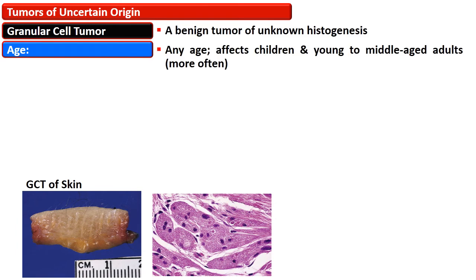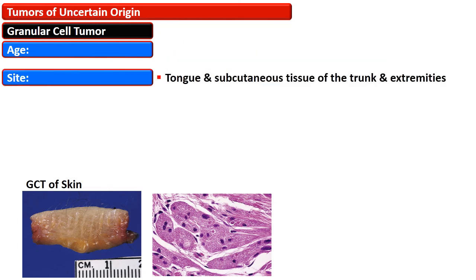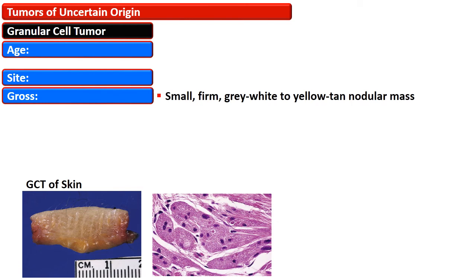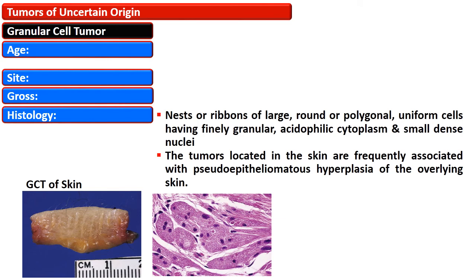The granular cell tumor is a benign tumor of unknown histogenesis that affects younger and middle-aged adults more often. The common sites are the tongue and subcutaneous tissue of the trunk and extremities. Grossly it is a small firm gray-white to yellow, thin nodular mass. Histologically it is characterized by nests or ribbons of large round or polygonal uniform cells having finely granular acidophilic cytoplasm and small dense nuclei. Tumors located in the skin are frequently associated with pseudoepitheliomatous hyperplasia of the overlying skin.